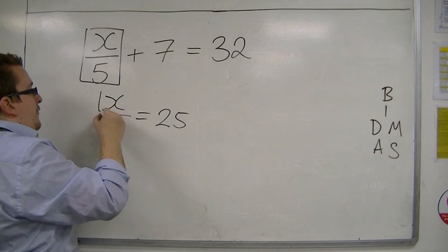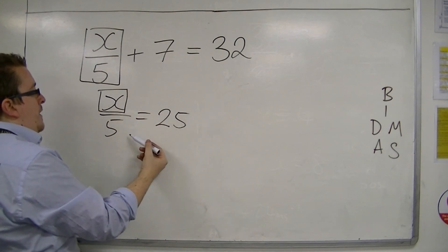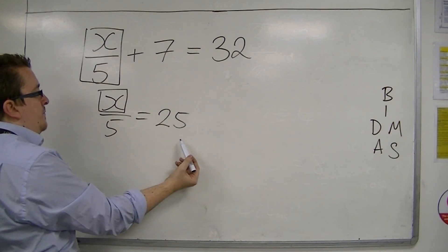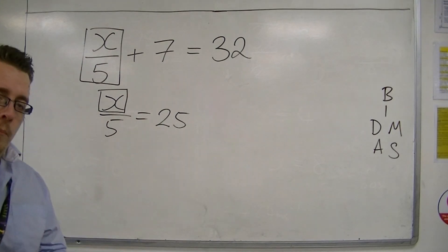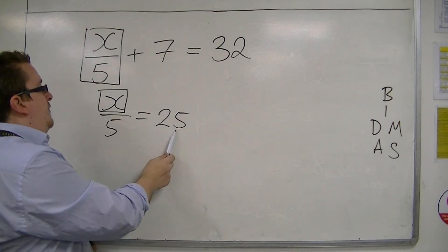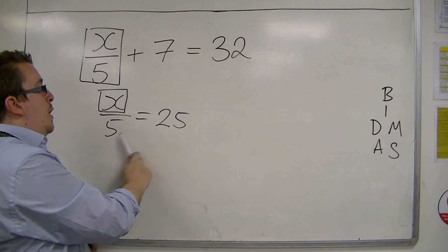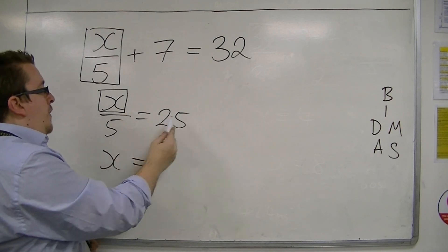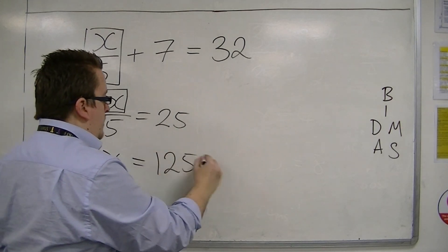Then I've got something divided by 5 is 25. Now that one's a little bit more complicated. Something divided by 5 is 25, but it's the same thing as 5 times 25. So you can multiply those numbers together. So 5 lots of 25 is 125.